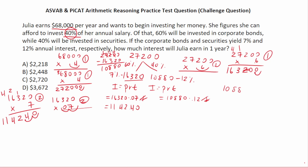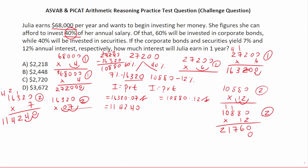Now we have 10,880 times 0.12. Move our decimal two places to the right — this becomes 10,880 times 12, with two decimals to move back in when done. 0 times 2 is 0. 8 times 2 is 16, carry a 1. 8 times 2 is 16, plus 1 is 17, carry a 1. 0 times 2 is 0, plus 1 is 1. 2 times 1 is 2. Add a 0 placeholder: 1 times 0 is 0, 1 times 8 is 8, 1 times 8 is 8, 1 times 0 is 0, 1 times 1 is 1. Add it all up and bring in our two decimals — so this interest is $1,305.60.